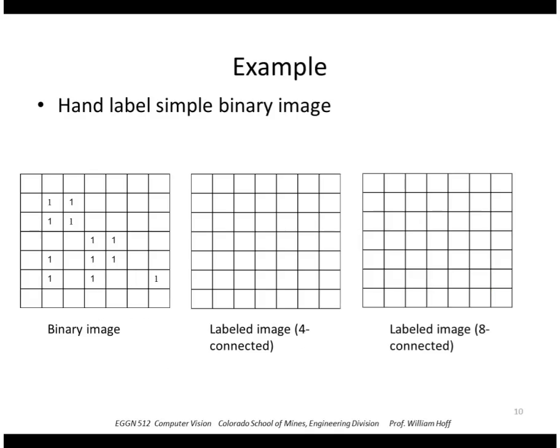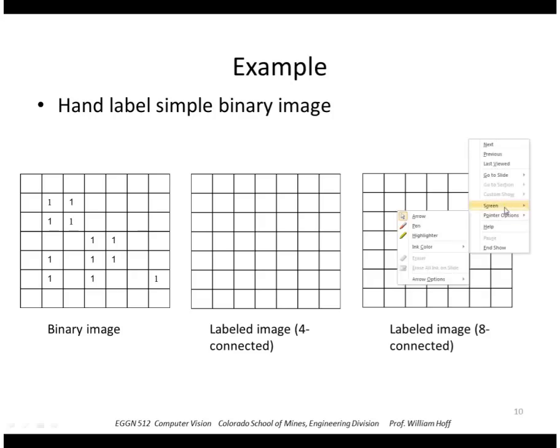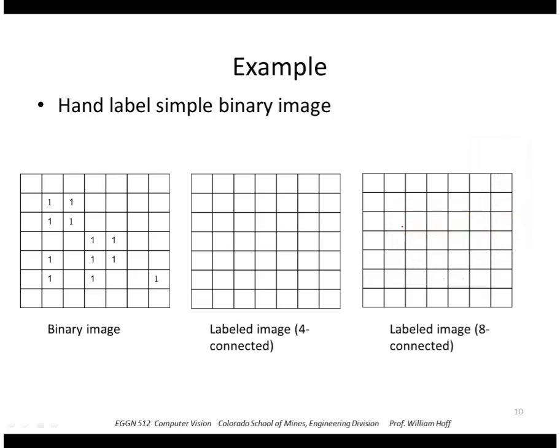Here's an example. I'm going to hand-label this simple image. So I could assign the value, the label 1, to that group of 4, assuming I'm using the 4-connected option.